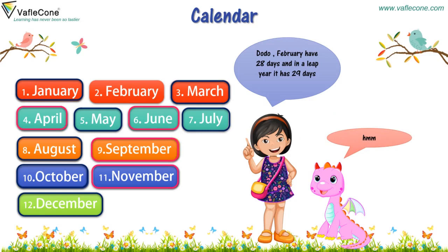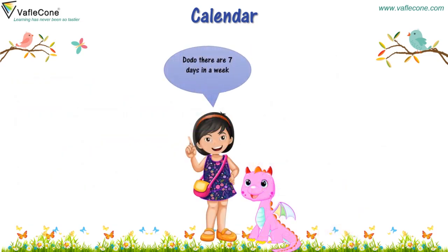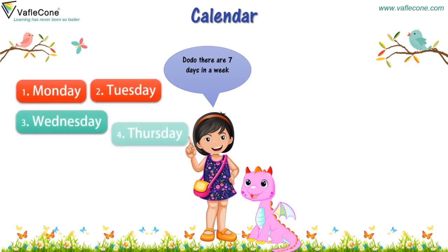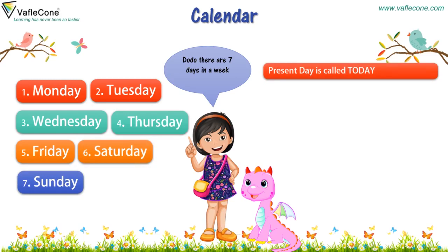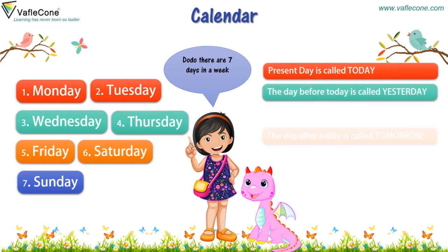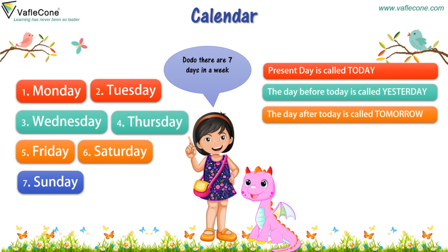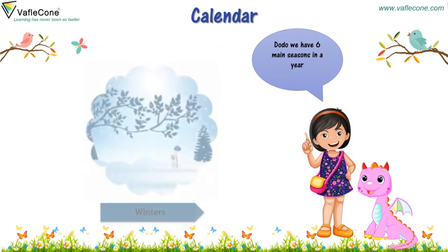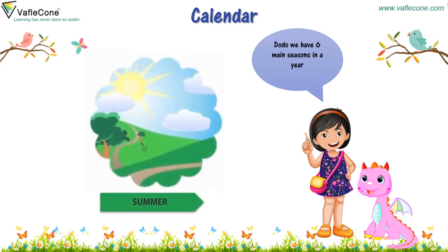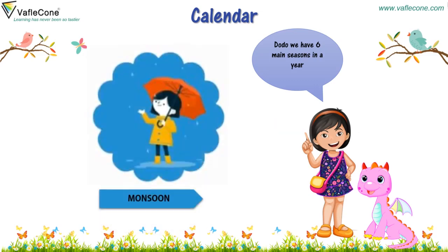Dodo, there are 7 days in a week: Monday, Tuesday, Wednesday, Thursday, Friday, Saturday, and Sunday. The present day is called today. The day before today is called yesterday. The day after today is called tomorrow. And what about seasons? We have 6 main seasons in a year: pre-winters, winters, spring, summer, monsoon, and autumn.